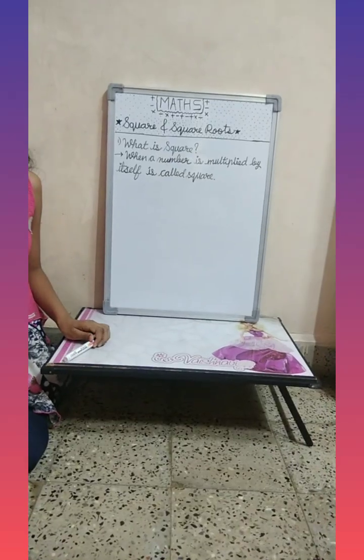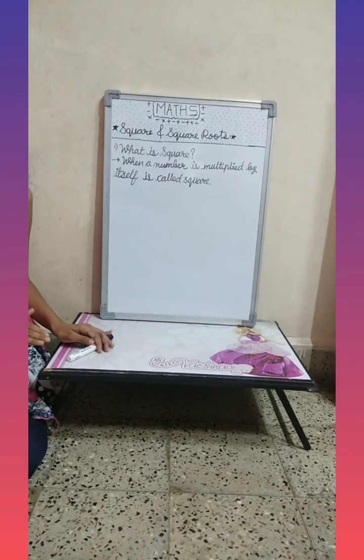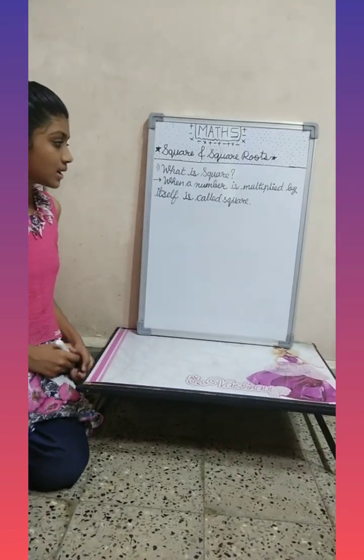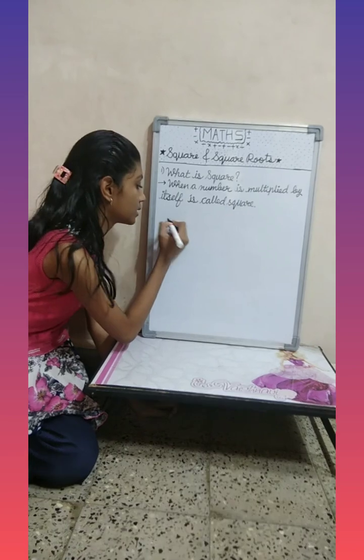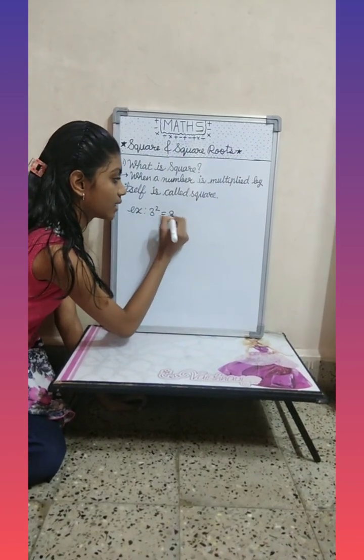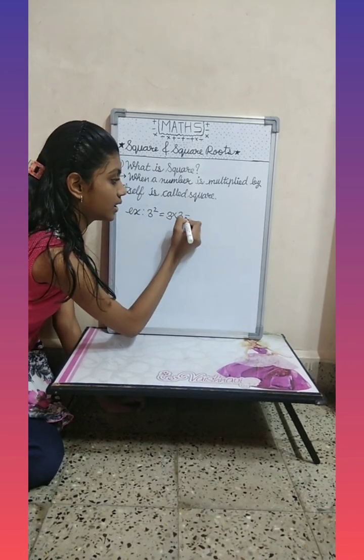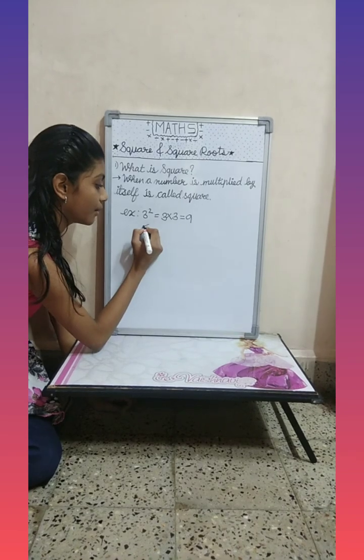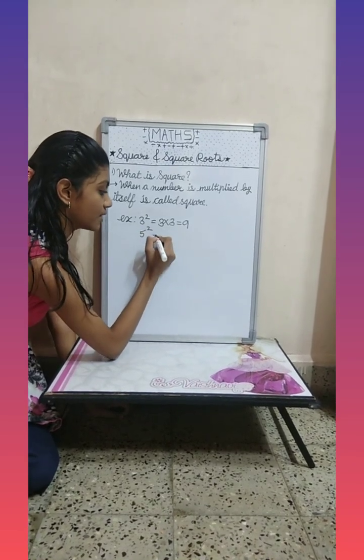What is square? When a number is multiplied by itself, it is known as square. Let us see some examples. Three square is three multiplied by three, equals nine. Let's see one more example: five square is five multiplied by five, equals twenty-five.